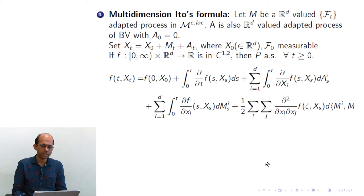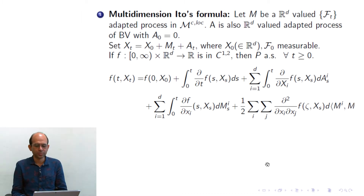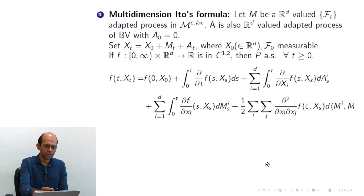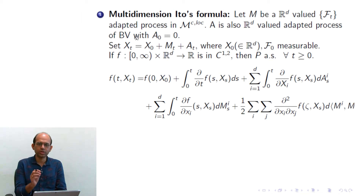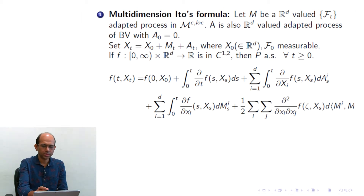Now we will see some generalizations of Itô's formula. We are not going to prove these results, we are going to state them, which is immediate in the sense that exactly the same techniques are required. This is just the multidimensional version of that. Imagine that your X semimartingale is not real-valued but Euclidean-space-valued.